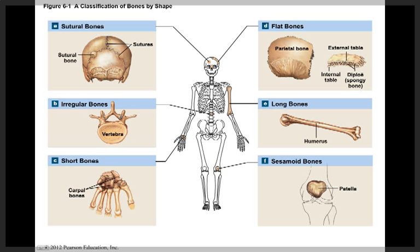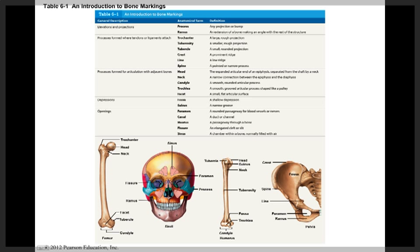The last classification of bones is the sutural bones, otherwise known as the wormian bones. They're small, flat, irregularly shaped bones between the flat bones of the skull. Their borders are like pieces of a jigsaw puzzle, and they range in size from a grain of sand to as wide as a quarter, filling in the gaps between the sutures in the skull.